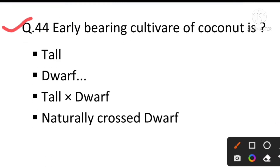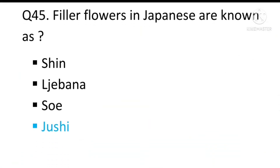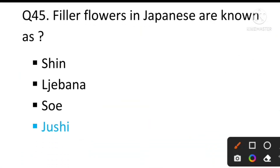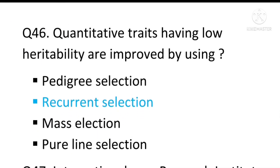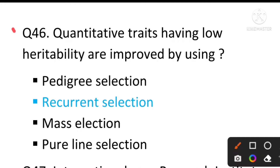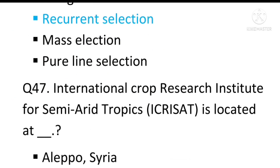Question number 44: Early bearing cultivar of coconut is — the answer will be Dwarf. Question number 45: Filler flowers in Japanese floral arrangement are known as — the answer is juicy. Question number 46: Quantitative traits having low heritability are improved by using — the answer will be Recurrent selection.